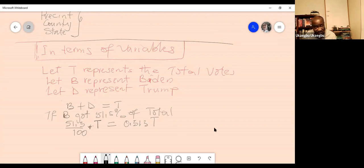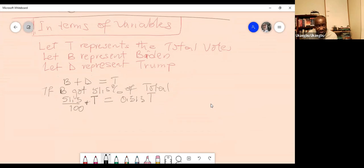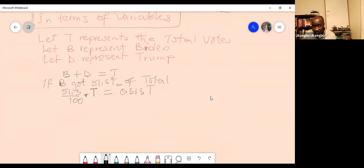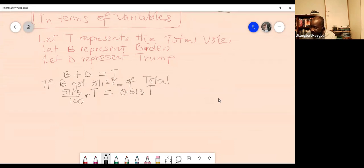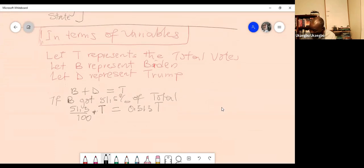Let's instead substitute this number back to the equation. So we are going to get 0.515T plus D equal to T. So how can you solve for D?